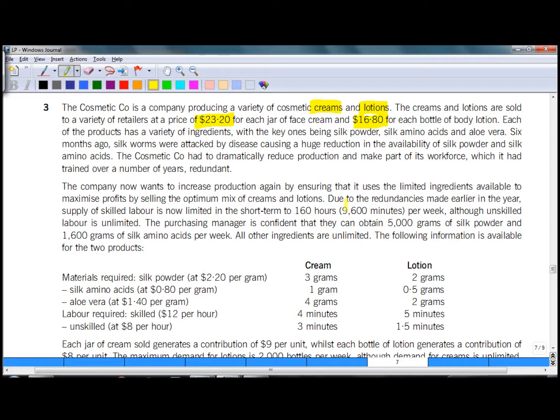Due to the redundancies made earlier in the year, supply of skilled labor is now limited up to 160 hours or 9600 minutes. So this is going to be one of my constraints. I will highlight it in red. Skilled labor. Depending which one is more useful, I will decide whether to use hours or minutes. Now read through the rest of the document and identify all the remaining constraints.